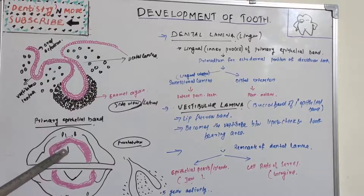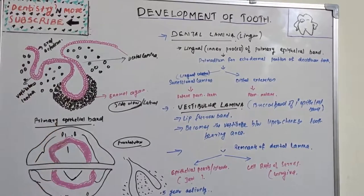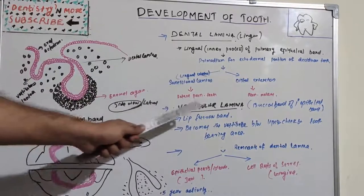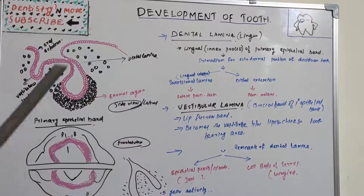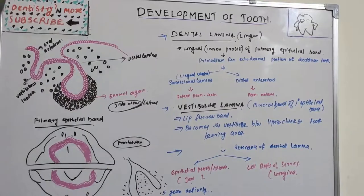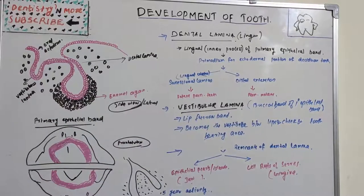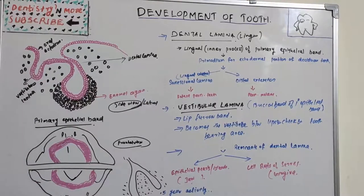The vestibular lamina — the buccal portion of the primary epithelial band — is also known as the lip furrow band. It gives rise to the vestibule between the lips and cheeks and the tooth-bearing area (alveolar bone). It essentially becomes the lip furrow, forming the space between the alveolar bone and the lips and cheeks.